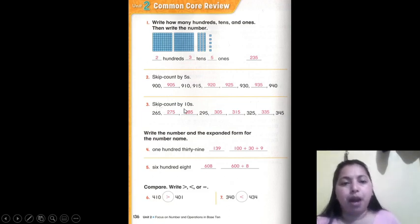Skip count by tens. 265, 275, 285, 295, 305, 315, 325, 335, and 345. This is 10 by 10. Number 2 is 5 by 5.